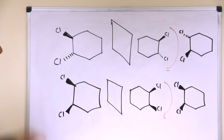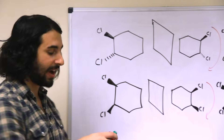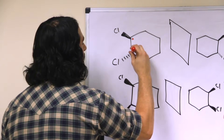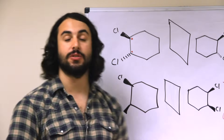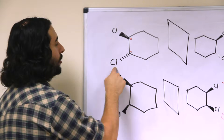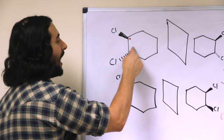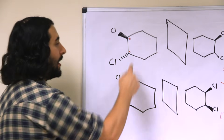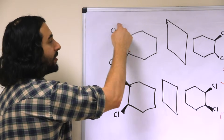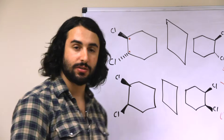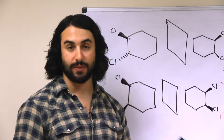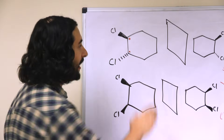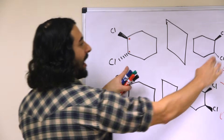Let's take a look at this molecule — we have two chiral centers here, because each of these carbons is connected to four different groups: for example, a chlorine, the implied hydrogen, and then two different carbon chains on each side. In one direction there's a chlorine atom that is not present on the other direction, so those are different groups.